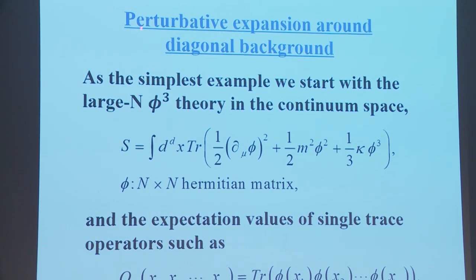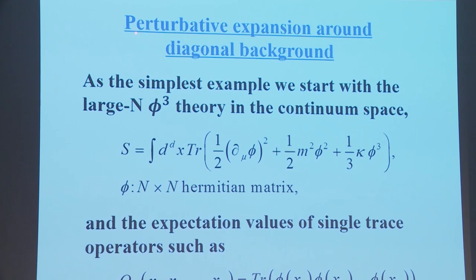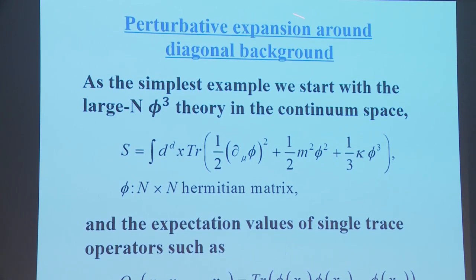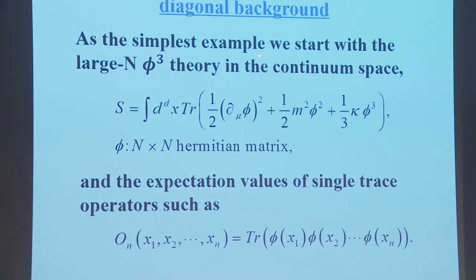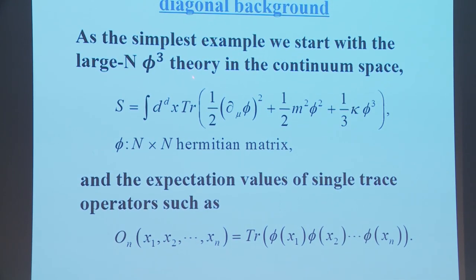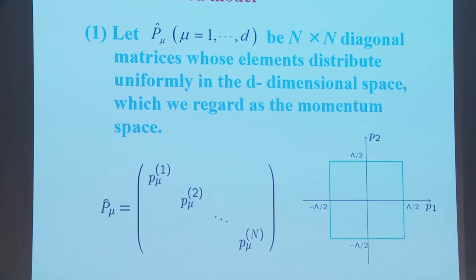The next proof of large-N reduction is perturbative expansion around a diagonal background. As the simplest example, we start with the large-N φ³ theory in continuous space, where φ is an N×N Hermitian matrix. We consider the expectation values of single-trace operators such as Tr[φ(x1)φ(x2)...].